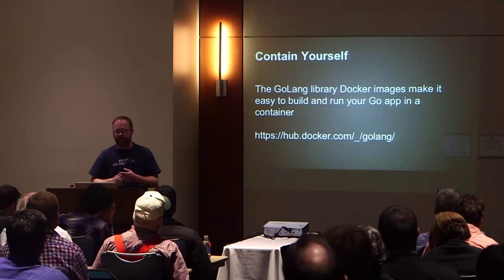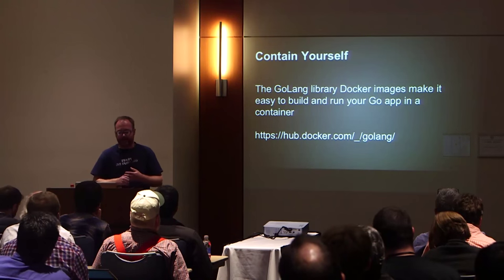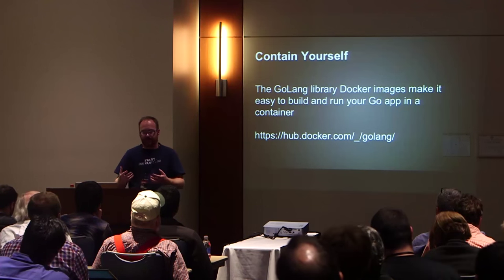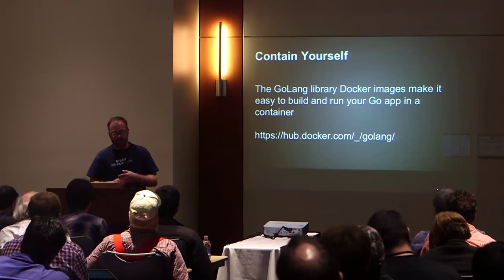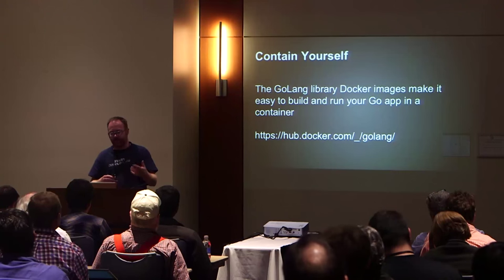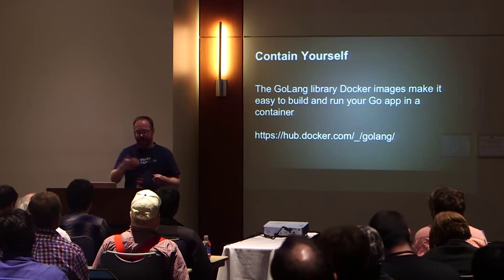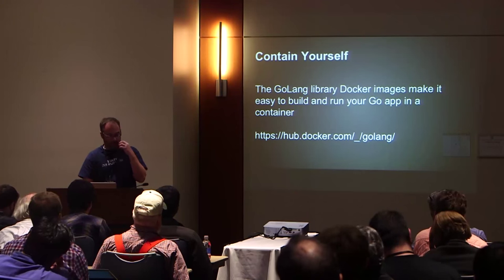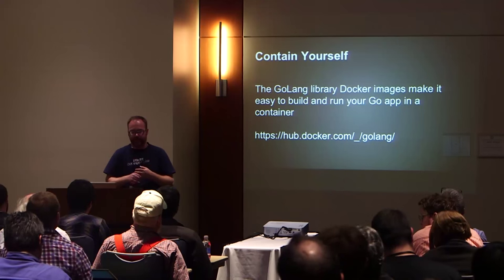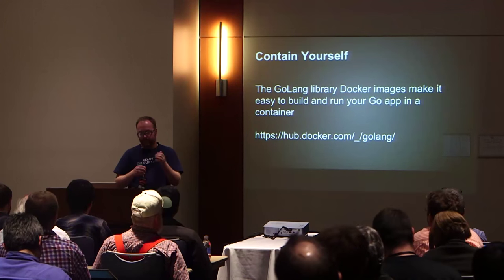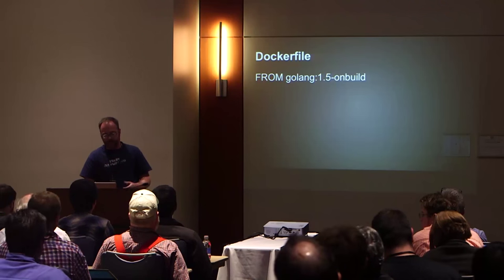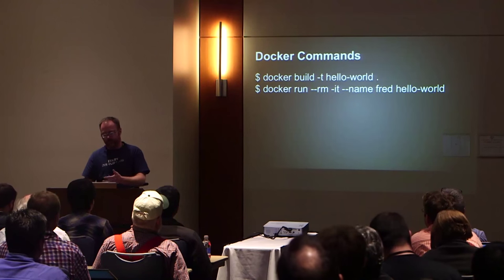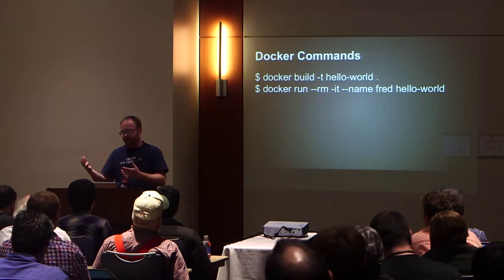My actual preferred method of producing something for production is to put it in a Docker container. Go programs lend themselves really well to Docker containers because they don't have any, or very few, dependencies — they're statically compiled binaries, generally very small. You can actually start with a scratch image that has nothing in it, add your statically compiled binary, and that's the only thing in it and it runs just fine. There's also a Go layering library image for Docker that contains the entire Go compilation toolchain and runtime. Your Docker file can have just one line. Then Docker build and Docker run, and if it works, push it to the registry for deployment.